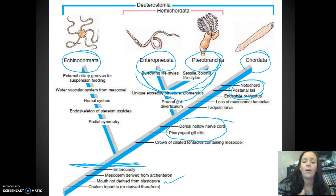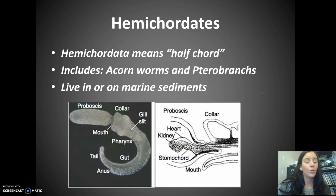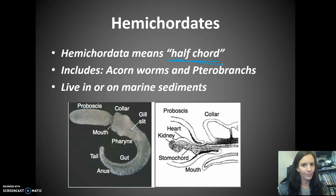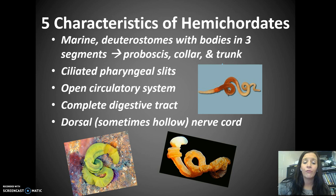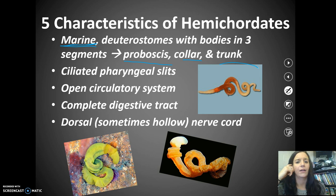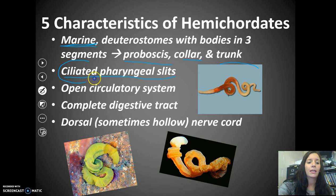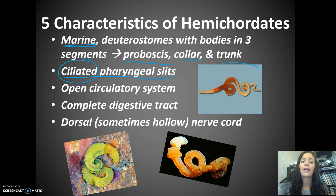The term hemichordata generally means 'half-chord,' and this includes things like acorn worms and pterobranchs, which live in or on marine sediments. There are five characteristics of hemichordates: they're marine, they're deuterostomes with bodies in three segments — a proboscis, a collar, and a trunk. They have ciliated pharyngeal slits, an open circulatory system, a complete digestive tract, and that dorsal, sometimes hollow, nerve cord.